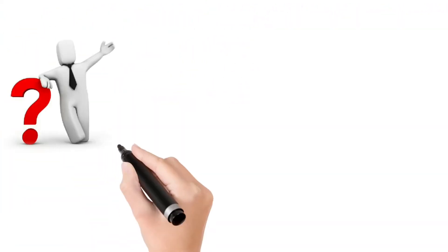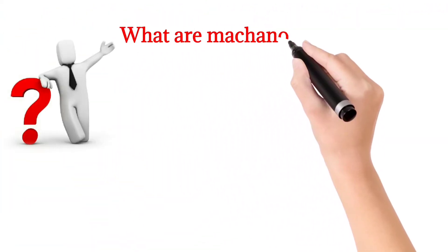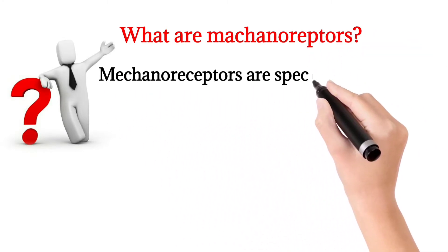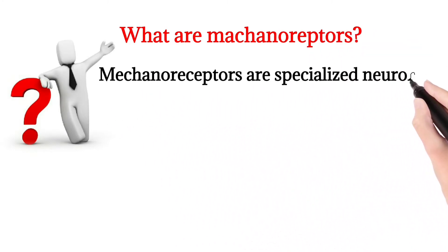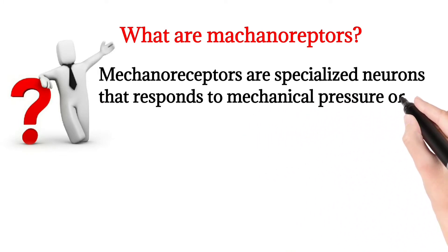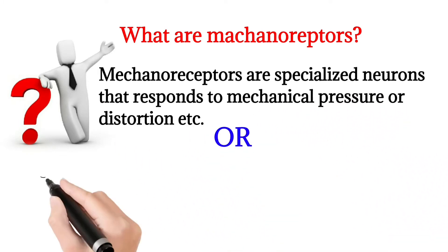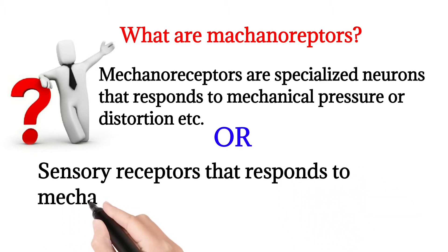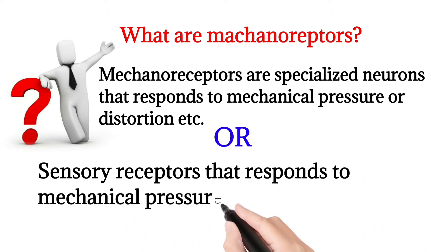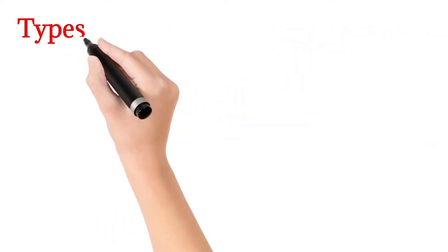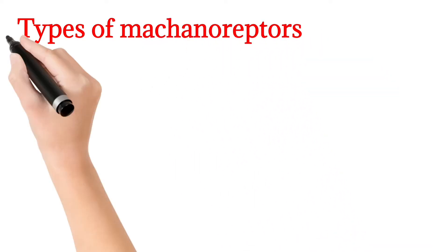First, what is mechanoreceptors? Mechanoreceptors is defined as a specialized neuron that responds to mechanical pressure or distortion, or it is a sensory receptor that responds to mechanical pressure or distortion.